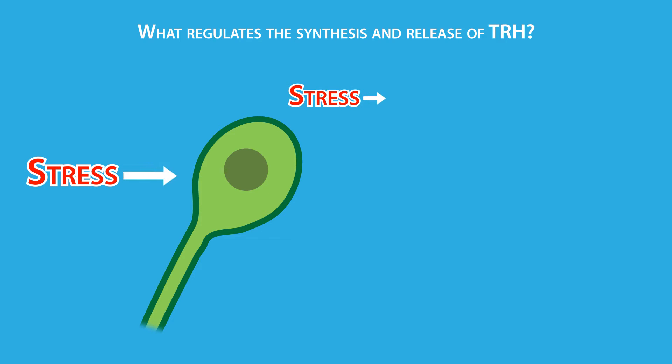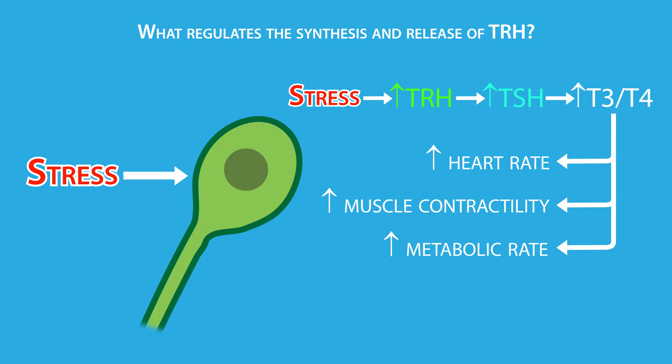Likewise, stress stimulates the synthesis and release of TRH, which is also a protective measure. Stress puts us in an alert mode by increasing heart rate, muscle contractility, and metabolic rate, which are a part of the fight or flight response.